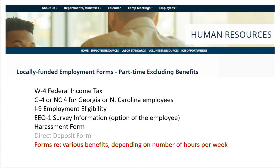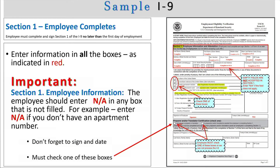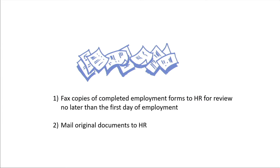The I-9 form, which has to do with citizenship and immigration status, must be filled out in a very specific way and must be mistake-free. The local payroll page has a sample I-9 that you can reference to make sure it has been filled out correctly. Once you have the forms all filled out and signed, fax copies to HR for review no later than the first day of employment. At that point, they can let you know if you're missing anything. Once you have the final OK, you can mail them the original documents.